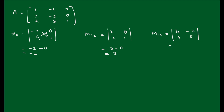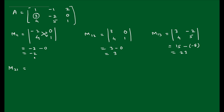Similarly, M12 is for the element in the first row, second column (minus 1). We delete the first row and second column, and the remaining four elements are 3, 0, 4, 1. So the determinant is (3)(1) minus (4)(0), which equals 3. Then M13 is for the first row, third column element. After deleting that row and column, the four elements are 3, minus 2, 4, 5. The determinant is (3)(5) minus (4)(minus 2) = 15 minus (minus 8) = 23. Similarly, M21: after deleting the second row and first column, we get minus 1, 2, 5, 1. The determinant is (minus 1)(1) minus (5)(2) = minus 1 minus 10 = minus 11.